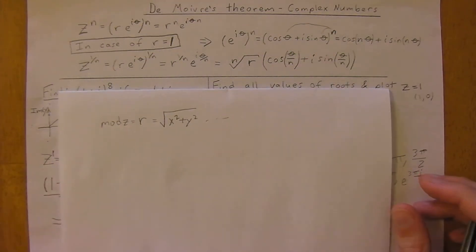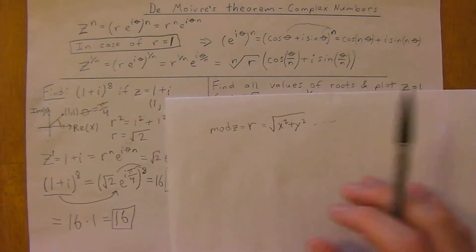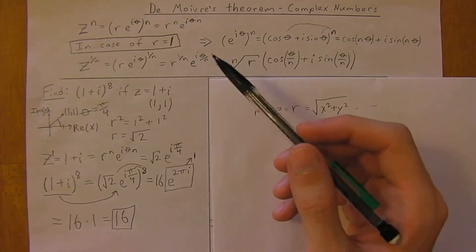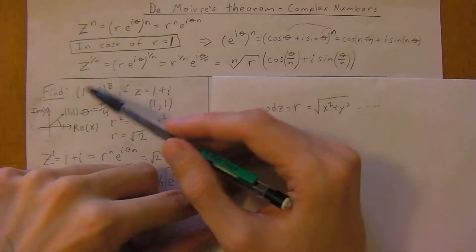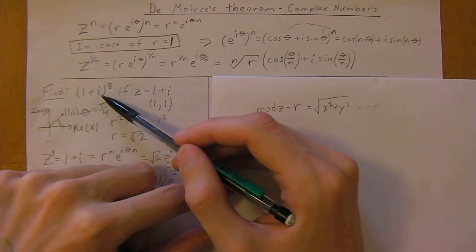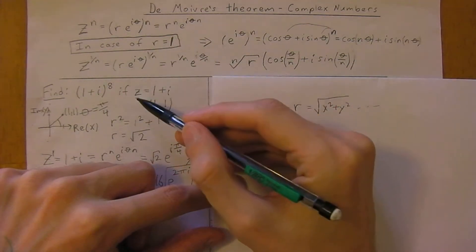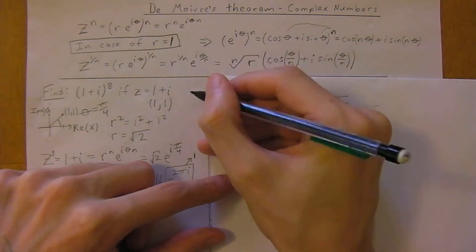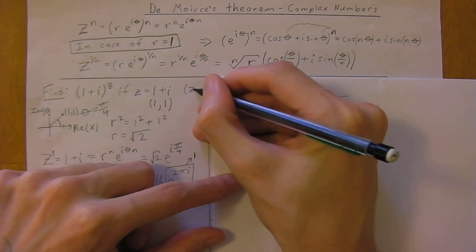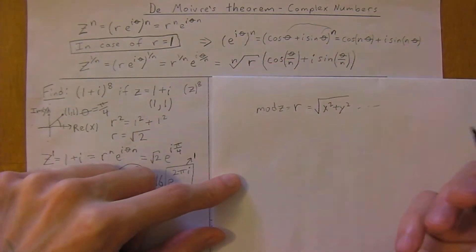Okay, so let's run through a few quick examples. In the first example, we have 1 plus i all to the eighth power, so z is 1 plus i. What we've got is z to the eighth power.